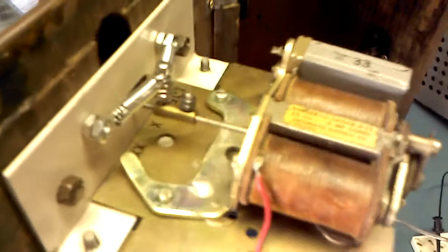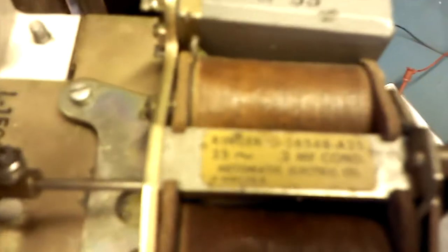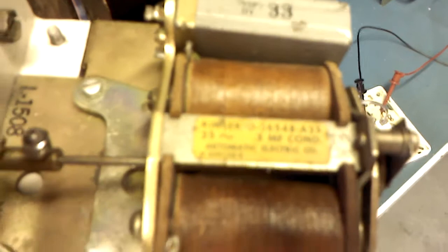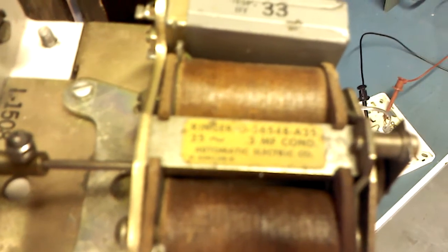Now this ringer at one time, before it had all this modification done to it, if the focus would work correctly on this thing, you'll see that there's a little 25 tilde off to the left of that yellow label, indicating that this ringer was originally resonant at 25.